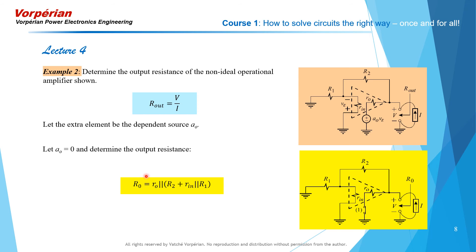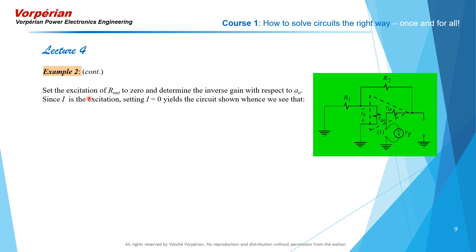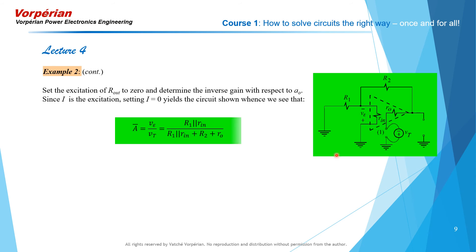That is our first computation for the extra element theorem, with the extra element taking a value of zero. We now perform the first additional calculation: the inverse gain with respect to A0 with the excitation of R_out set equal to zero. Since the excitation is the current source at the output, we open it, giving a very simple circuit. Three resistances in series and a voltage divider yield V_epsilon over Vt, which is R1∥Rn divided by R1∥Rn plus R2 plus R0. That is your ā.